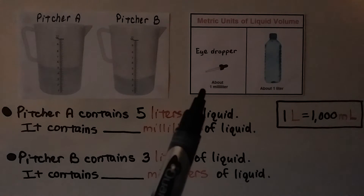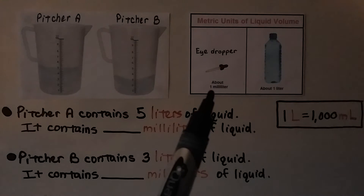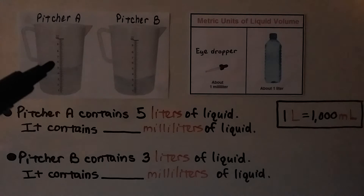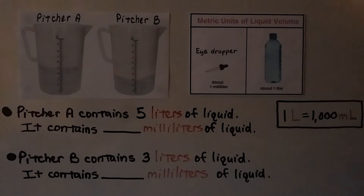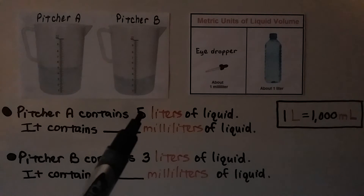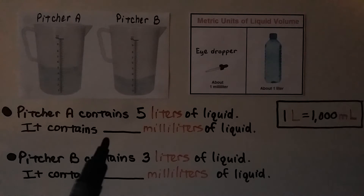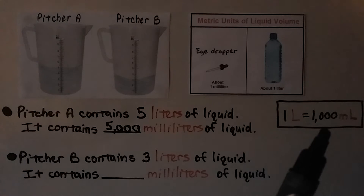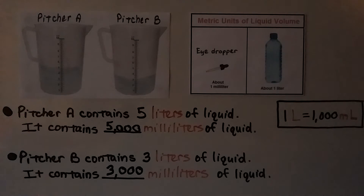An eyedropper full of liquid is about one milliliter, while a bottle is about a liter — showing how much smaller a milliliter is. Pitcher A has 5 liters and pitcher B has 3 liters. Pitcher A contains 5 times 1,000, which is 5,000 milliliters. Pitcher B contains 3 times 1,000, which is 3,000 milliliters.